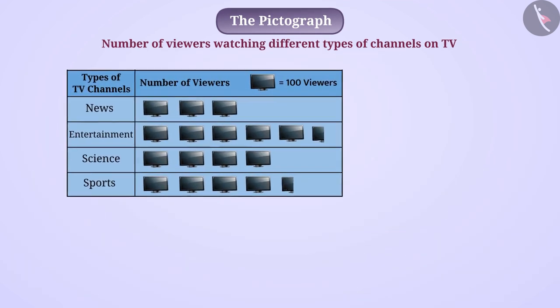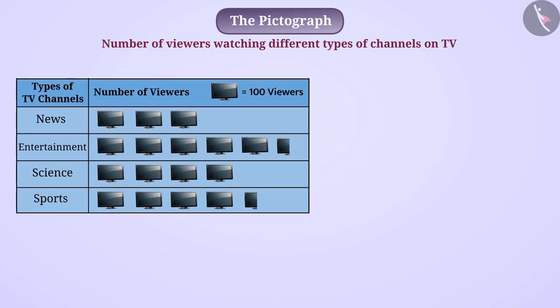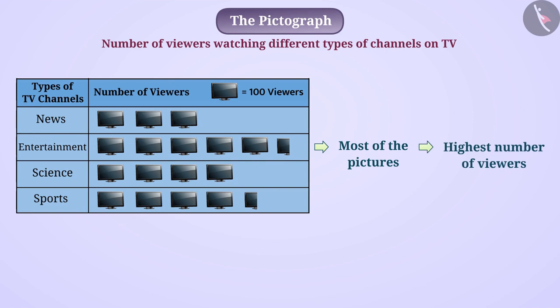Information can be obtained just by viewing the pictograph. Since most of the pictures are in the entertainment row, we can say that among all channels, the highest number of viewers are of the entertainment channel. The difference in the number of viewers of the science and sports channels is represented by half a picture, which represents 50 viewers.